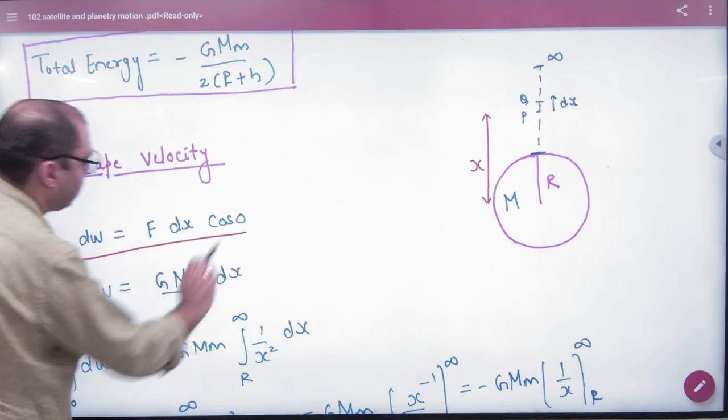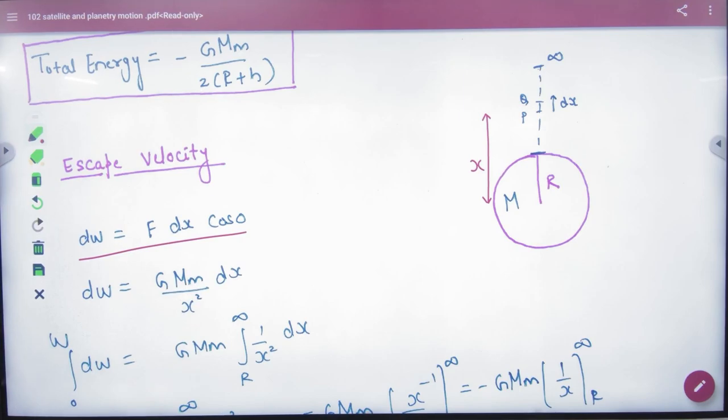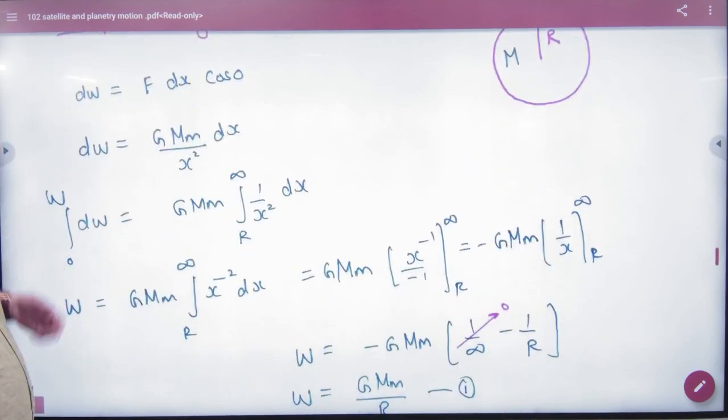So, small amount of work done. Small amount of work done after covering a displacement of dx, what will become? F dx cos zero. What will be the value of x-distance? Gmm by x² dx. So, let's integrate.